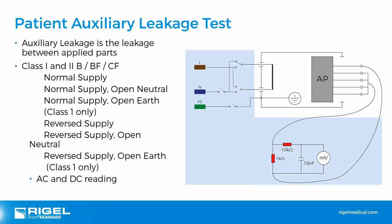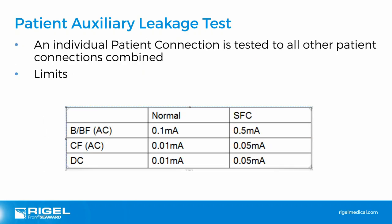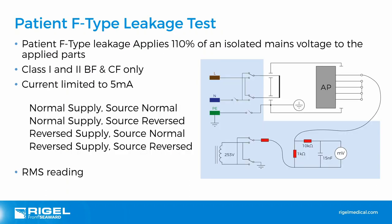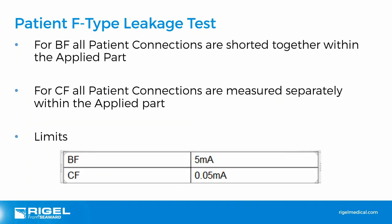Patient auxiliary leakage is identical to patient leakage except that leakage is measured between applied parts rather than between applied parts and earth. The same single fault conditions apply. Each individual patient connection is tested against all other patient connections combined. Patient F-type leakage applies 110% of isolated mains voltage to applied parts — class 1 and 2, BF and CF only — with a 5 milliamp current limiting resistor for safety. For BF, all patient connections within the applied part are shorted together; for CF, all patients are measured separately.